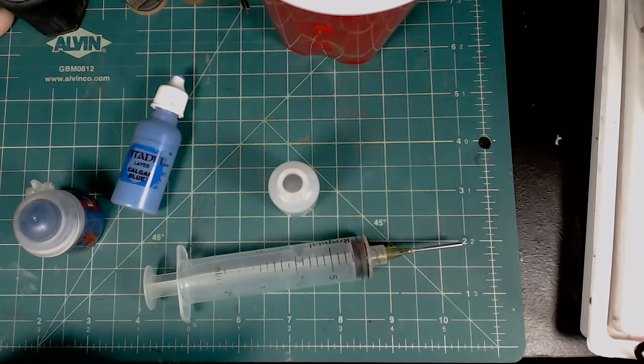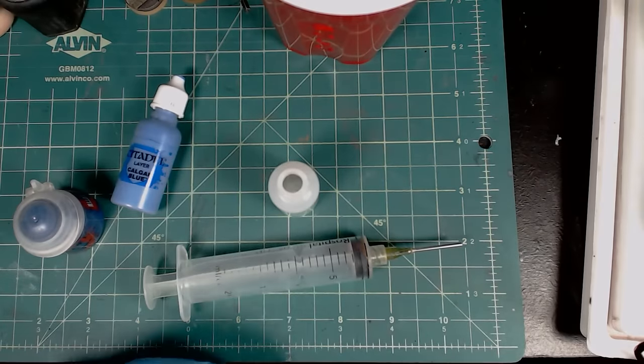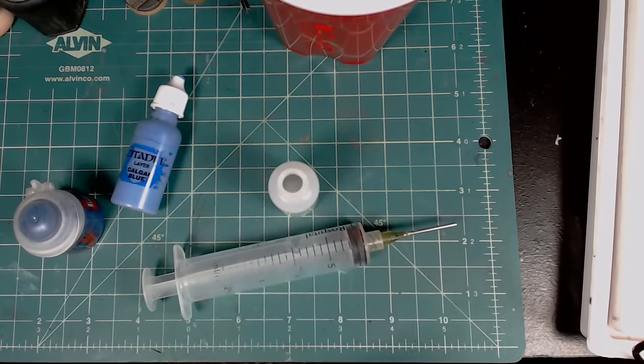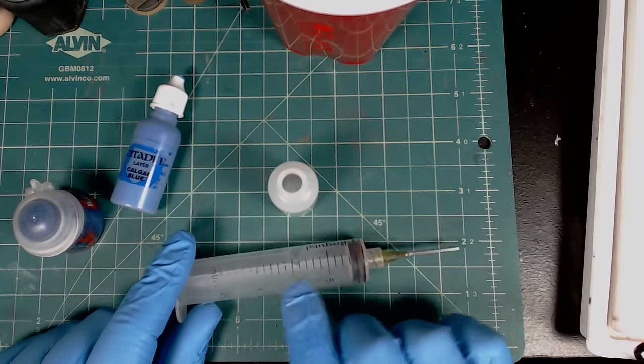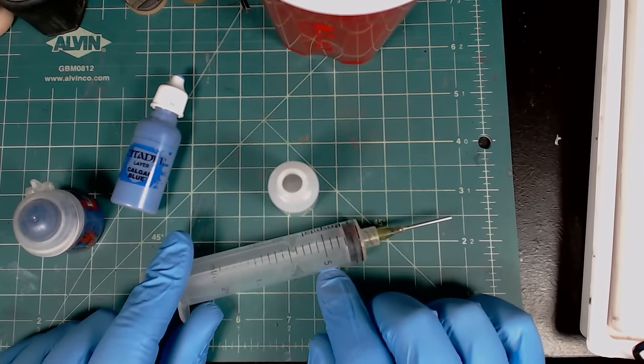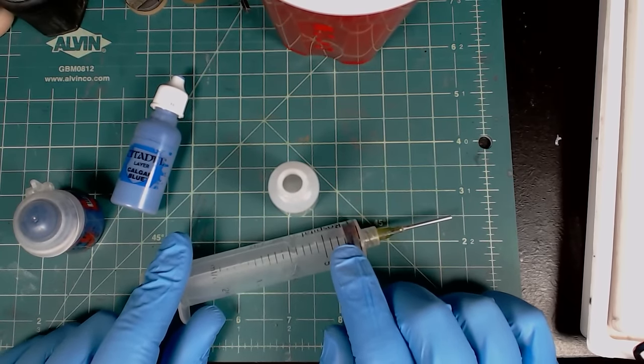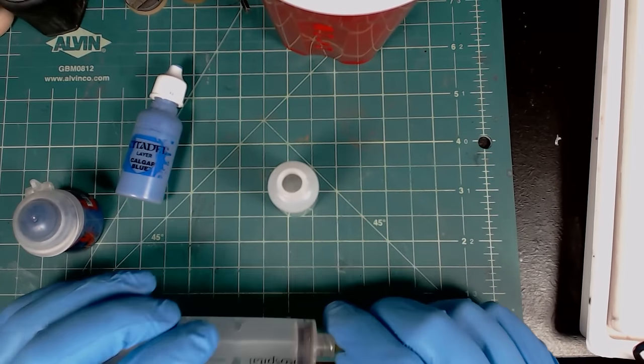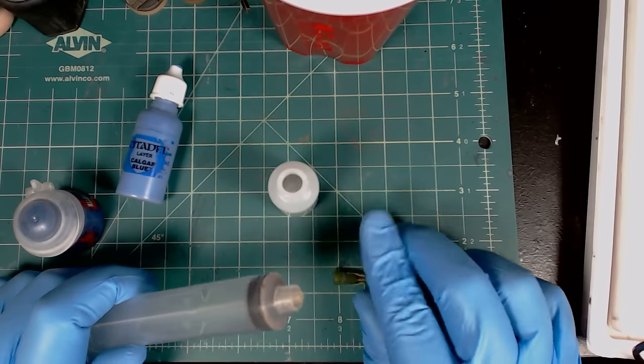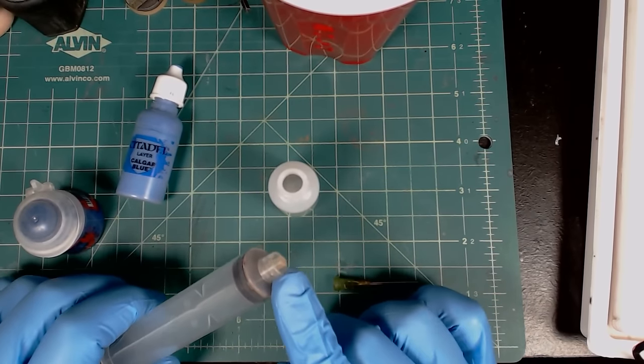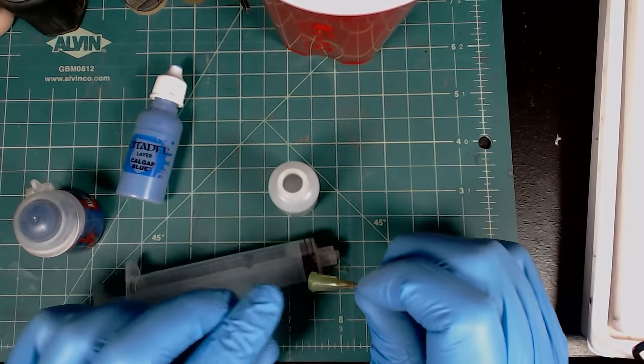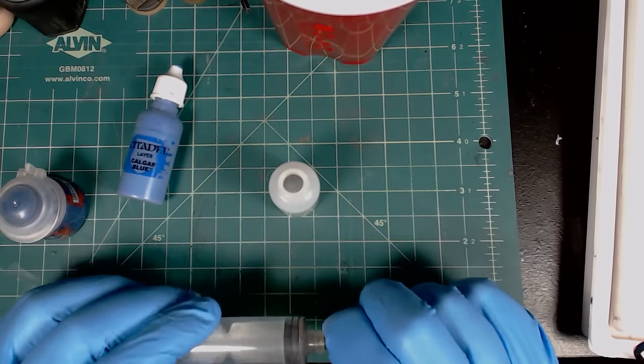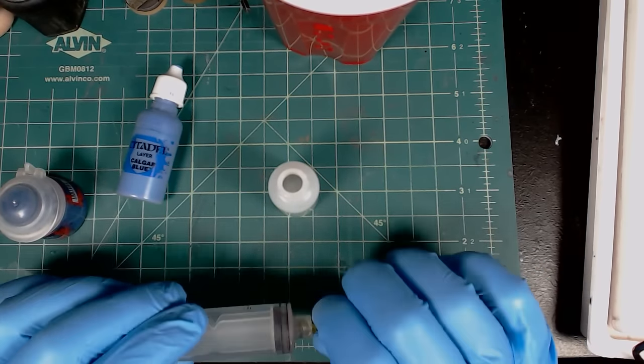So you'll need to buy the syringe and you'll need to buy these dispenser tips. The type of syringe that you need, the size is really I just wanted to make sure I had enough capacity to pull out all of the paint from the pot. But what you really need is these, these are called luer lock syringes.